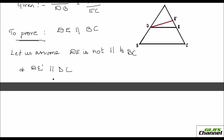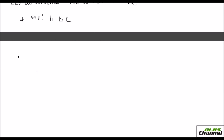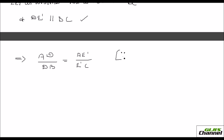We make this assumption and we are going to show that our assumption is not right, so DE is actually parallel to BC. If DE dash is parallel to BC, then as per the BPT theorem, we can say that AD over DB equals AE dash over E dash C. The reason here is the basic proportionality theorem — if two lines are parallel, the sides are proportionate.